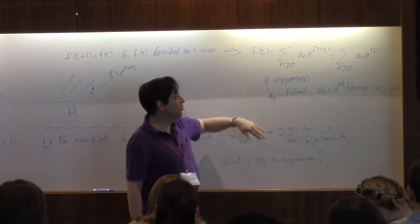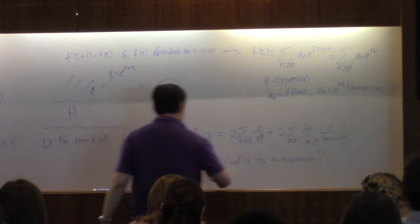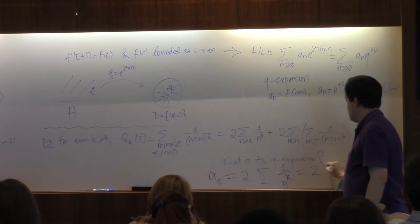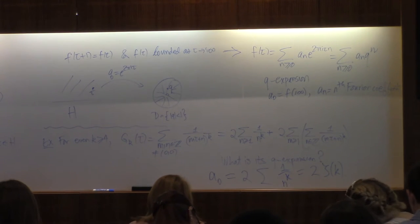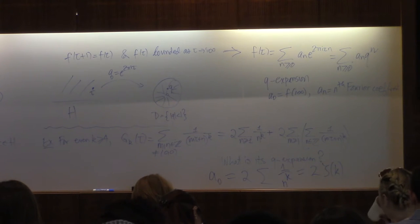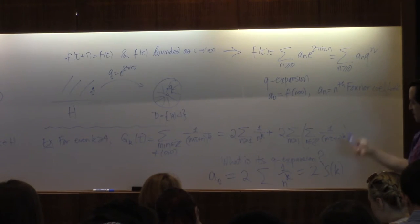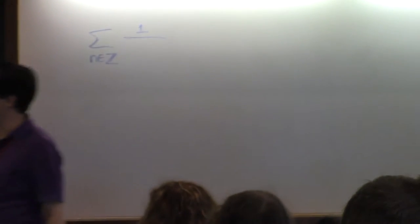And what we would like to do is write down the q expansion of the Eisenstein series. So all of these terms actually involve tau, because n is not 0 here. This is the constant term. The constant term of the q expansion, the a-naught, is the value as q goes to 0 or as tau goes to infinity, and so that's this. So we could say, without doing any calculations, the constant term has to be twice the sum of 1 over n to the k, which is twice the Riemann zeta function of k. The higher coefficients are not values of zeta function, but they're related to more number-theoretic type of divisor sums.